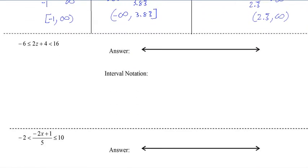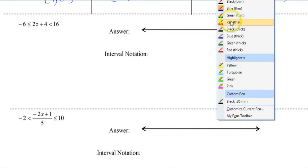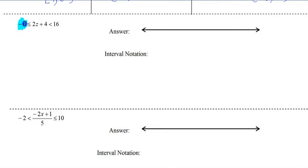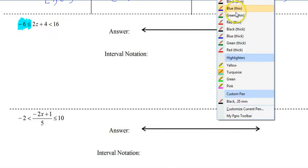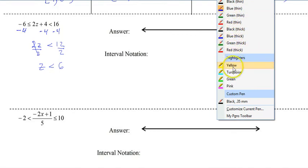These are called compound inequalities because we have two inequalities in one. So if you just kind of think about it this way. If I cover this side right there, it's just a normal inequality. So the way we would solve it is to go minus 4, minus 4. So 2z is less than 12. And divide by 2. So z is less than 6. The thing is, it's not. It's double. So when you do it, you also have to just minus 4 over there. It's two inequalities in one.